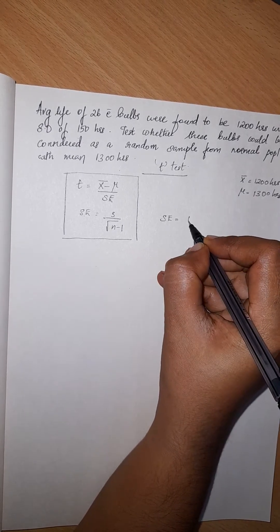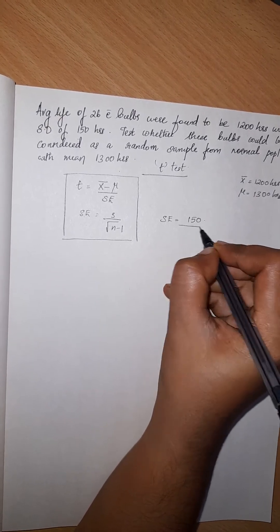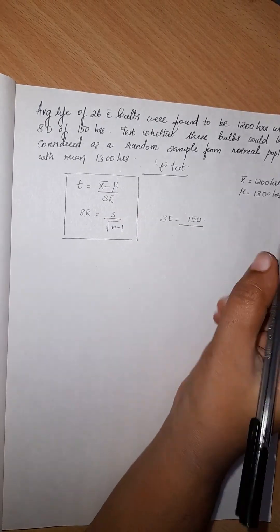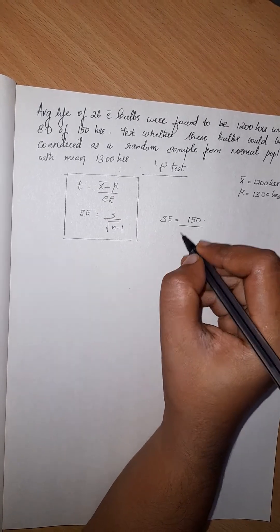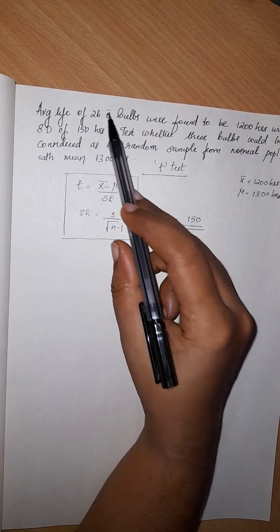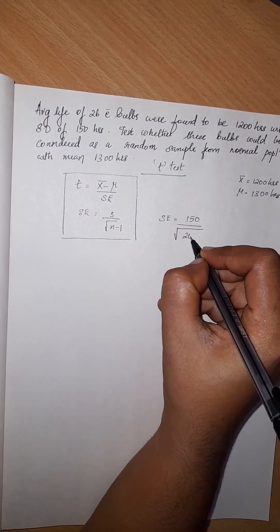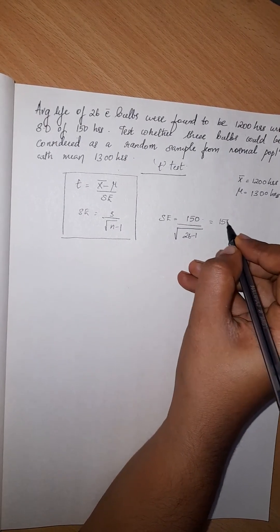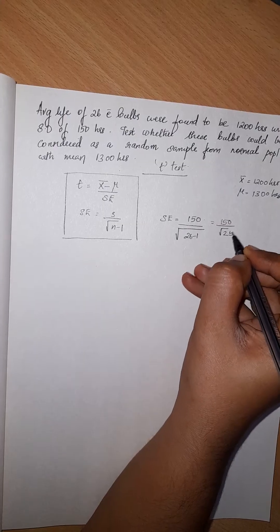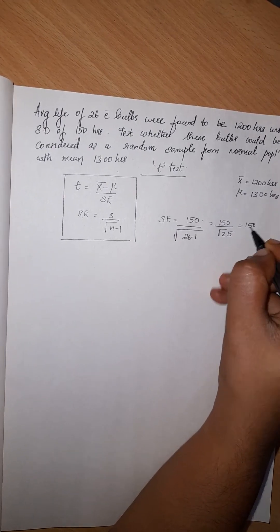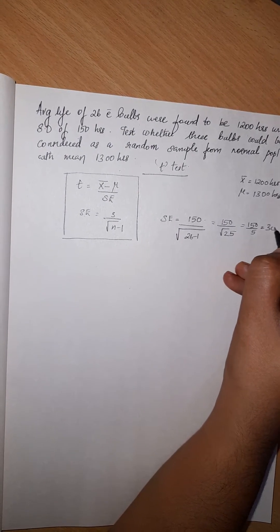S is 150, the standard deviation. Divide by root of n, which is 26, the sample size. 26 minus 1. That is 150 by root 25, which is 150 by 5, which equals 30. This is the standard error.